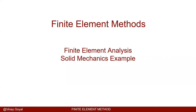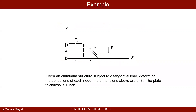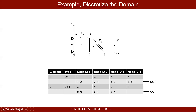Welcome to finite element methods. We'll be discussing a solid mechanics example. The domain consists of a square element with a traction force applied on its top surface, and a triangular element with a shear traction. Each side distance is b. This is an aluminum structure subjected to a tangential load, with b equals three and plate thickness of one inch.